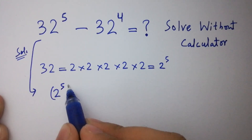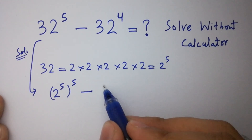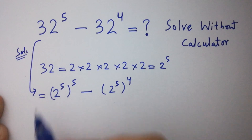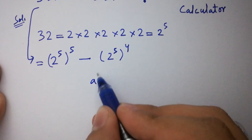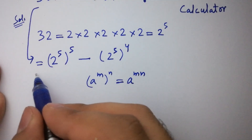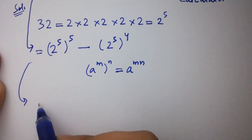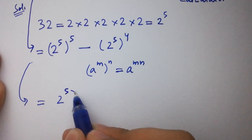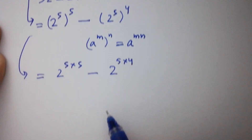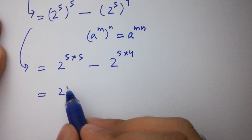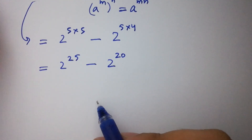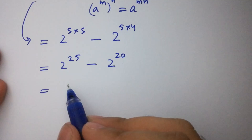Then it will be 2 to the power 5, to the whole power 5, minus 2 to the power 5, to the whole power 4. As the rule a to the power m, to the whole power n, equals a to the power m times n, we have 2 to the power 5 times 5 minus 2 to the power 5 times 4, giving us 2 to the power 25 minus 2 to the power 20.